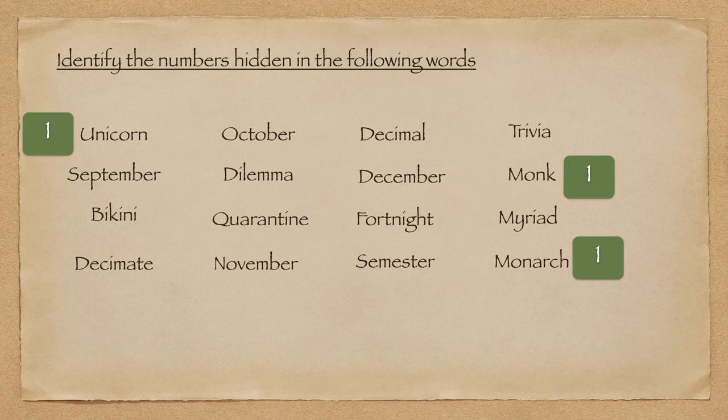So let's start with the number 2. The roots or the prefixes for the number 2 are bi, di, and do. So the first word is binary. Binary means related to, or consisting of, two things. Bi is two.